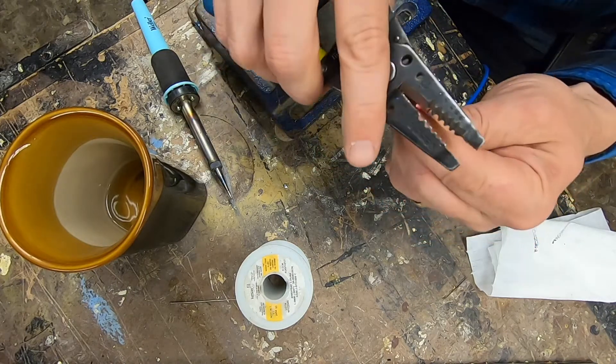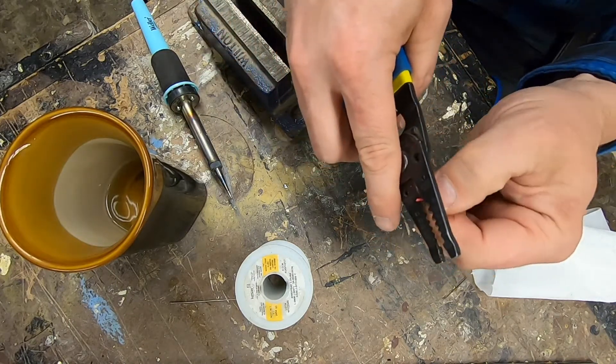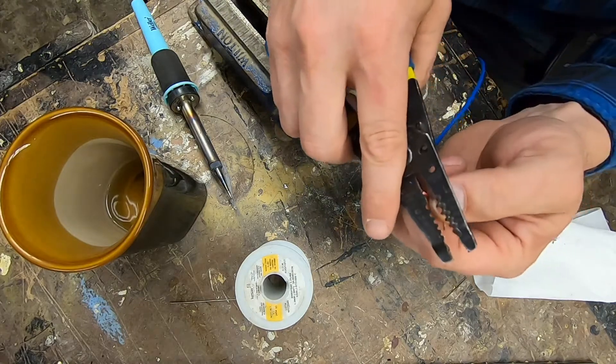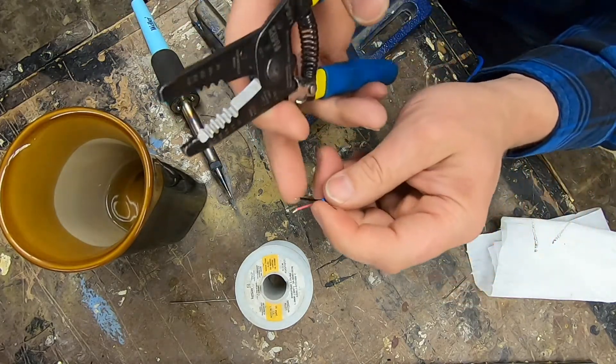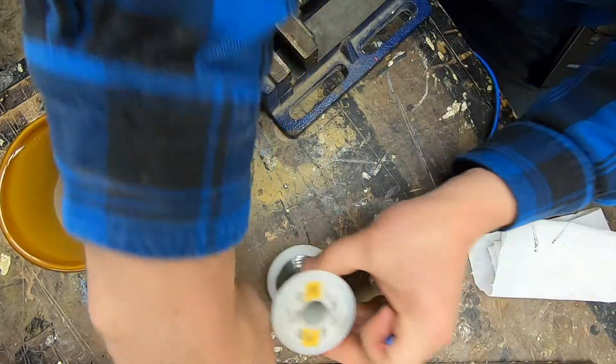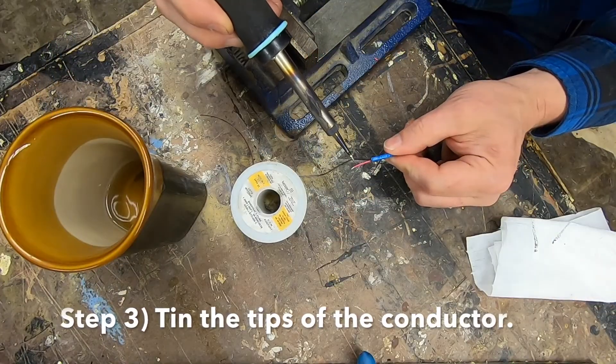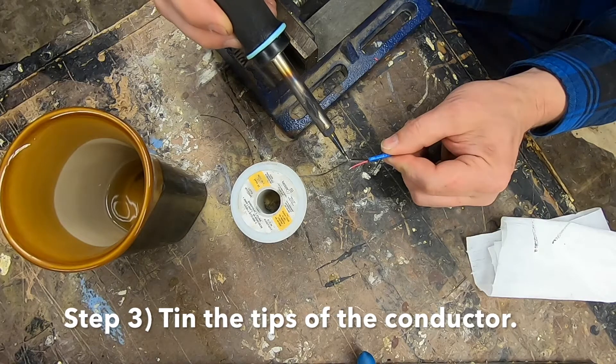On the positive and negative, I'm going to take off about 3/16ths of the insulation, 3/16ths right there.